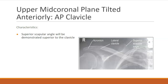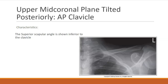As discussed in our previous video, when there is plane tilting, we're looking for the superior scapular angle and its relationship to the clavicle. It should lie within the same transverse plane as the clavicle. When there is anterior tilt, the superior scapular angle will be projected above the clavicle. When there is posterior tilt, the scapular angle will be projected inferior to the clavicle. In both situations, you will need to properly align the patient's mid-coronal plane so that it is parallel with the IR.